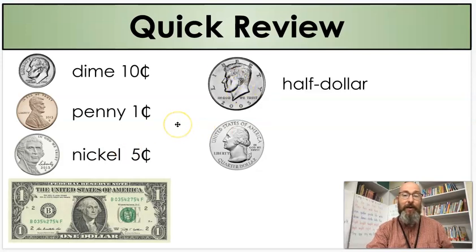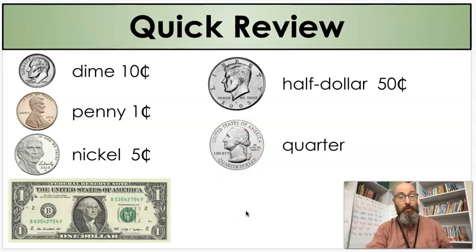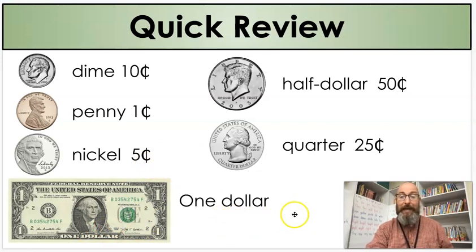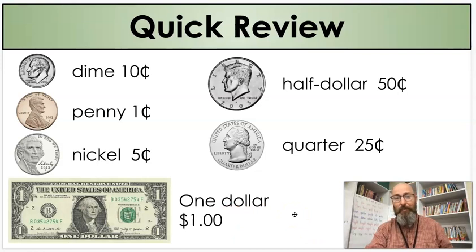Up here, we have our half dollar. And how much is a half dollar worth? 50 cents - half of a dollar. Then we have our last coin, a quarter. And how much is a quarter worth? 25 cents. I find it very interesting that a quarter says quarter dollar on the bottom, because it's worth one fourth or one quarter of a dollar. And our last one is a one dollar bill. How much is the one dollar bill worth? One dollar. The answer's in the name. That's right.